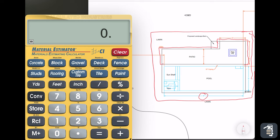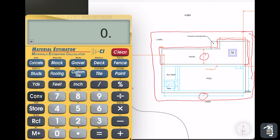Obviously there's a lot of functions on this estimating calculator. We're just going to go through a couple. What we're going to do is figure out the yardage and the tons of material that we're going to remove.